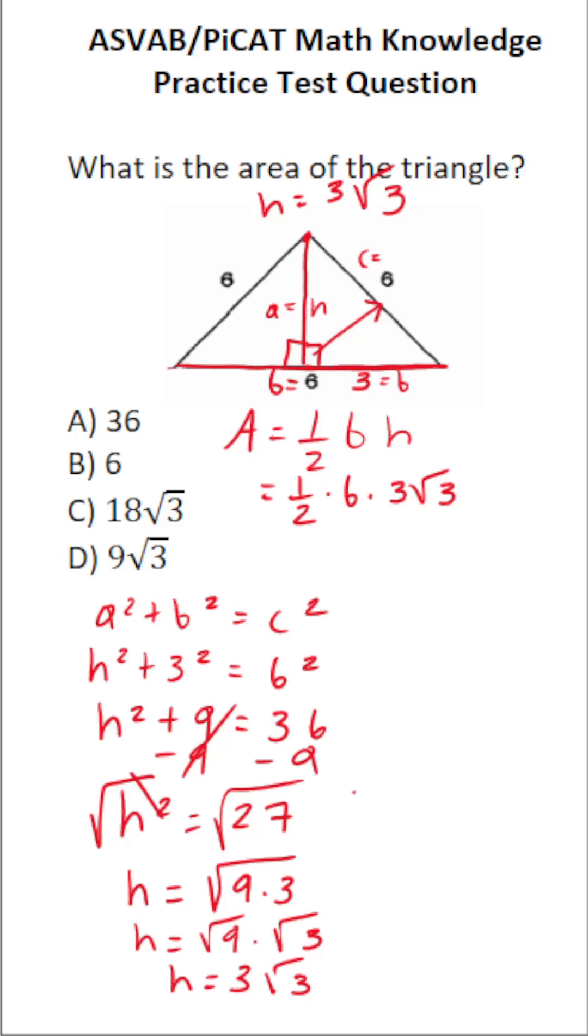Let's go ahead and work this out. One half times six is going to be three. So this becomes three times three radical three. Three times three radical three is going to be nine radical three. So the area of this triangle is nine radical three. The answer choice is D.